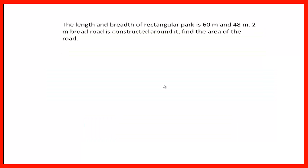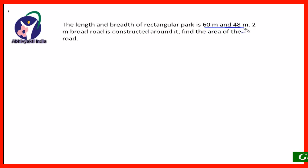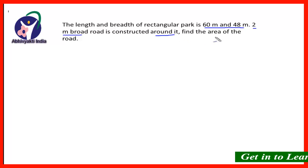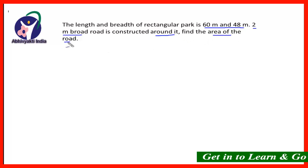Here is the first question: the length and the breadth of a rectangular park is 60 meter and 48 meter. A 2 meter broad road is constructed around it. Find the area of the road.